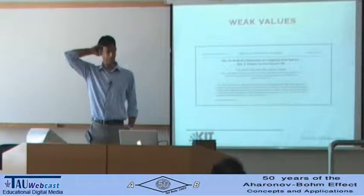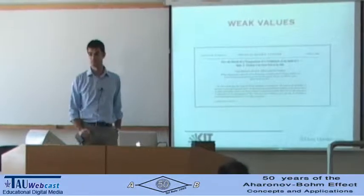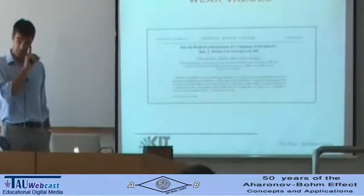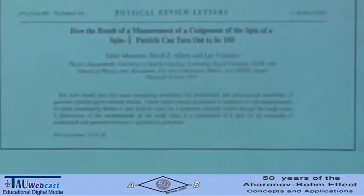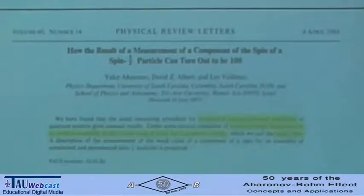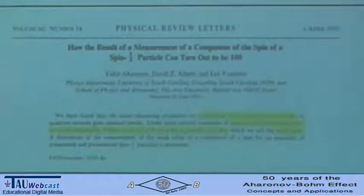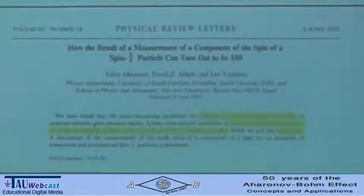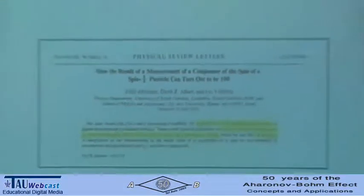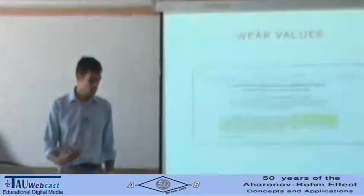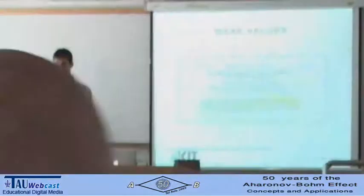I'll give my personal introduction to weak values. The paper in which this idea first appears is from 1988, from Weidmann, Albert, and Yakir Aharonov. What they claim is that the result of a quantum measurement can be quite strange. They consider a quantum measurement between a pre- and post-selected ensemble, and showed that if you make a weak measurement, there is a natural way to associate a result value to the measurement — they call this the weak value.